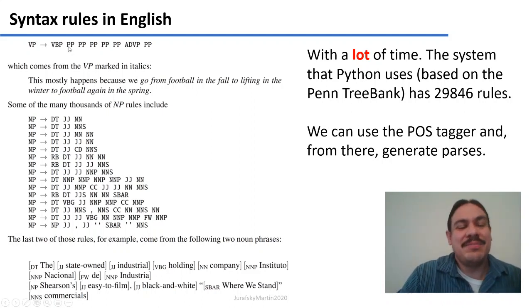And then prepositional phrase, prepositional phrase, adverbial phrase, prepositional phrase. You need this rule to account for English verbal phrases like go from football in the fall to lifting in the winter to football again in the spring. And these sentences are real, they do happen. These are some examples of the almost 30,000 rules derived from the Penn Treebank.